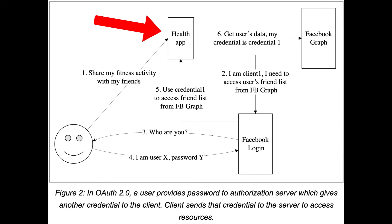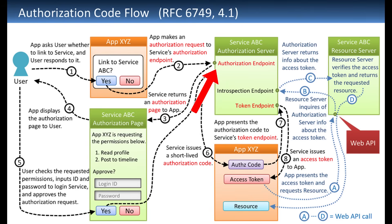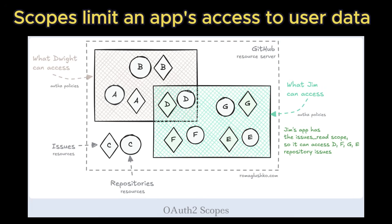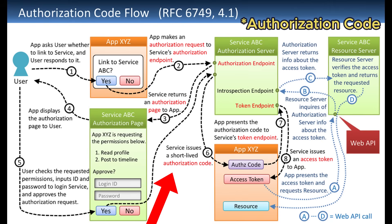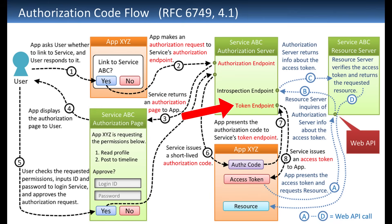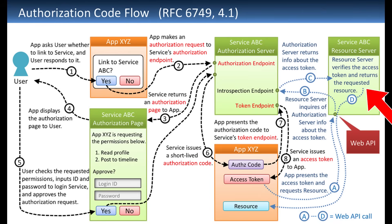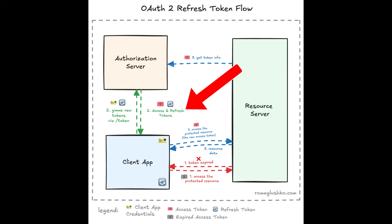When a client app wants to access a user's protected resources, it starts by redirecting the user to the authorization server's authorization endpoint. Here, the user logs in if not already, and approves the requested permissions — known as scopes, for example, read your contacts or modify your calendar. Scopes are vital to OAuth because they limit what an app can do, reducing potential damage if a token is leaked. Once the user consents, the authorization server sends back an authorization grant to the client. This grant is a temporary credential the client can exchange for an access token at the token endpoint, which is what the client actually uses to access protected resources. In some flows, the authorization server may also issue a refresh token — a long-lived token that can be exchanged for new access tokens without requiring the user to log in again, essential for maintaining sessions securely.